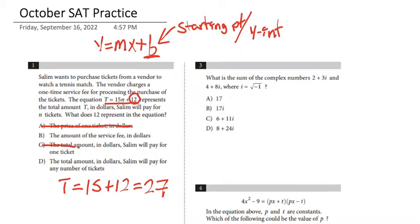It also cannot be the total amount that Solem will pay for one ticket. The answer is the service fee — the fee that Solem needs to pay one time. It's an initial amount before he buys any tickets; he knows he is going to have to pay that $12. So the answer is the amount of the service fee in dollars.